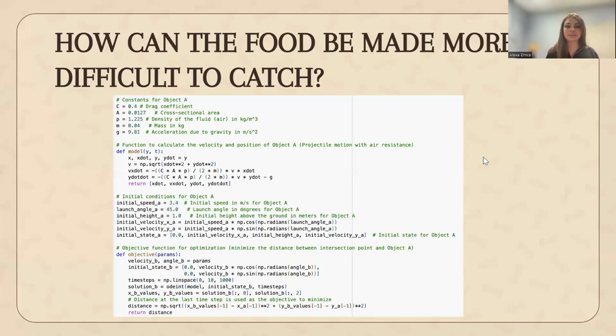And here you can see a snippet of our code. All of the models were made in Python, and here basically what is happening is you can input all of these different parameters that contribute to the angle and velocity that Fritz needs to jump at. It takes this and finds the velocity and the position of the food, and then from there it is able to solve the ordinary differential equations.